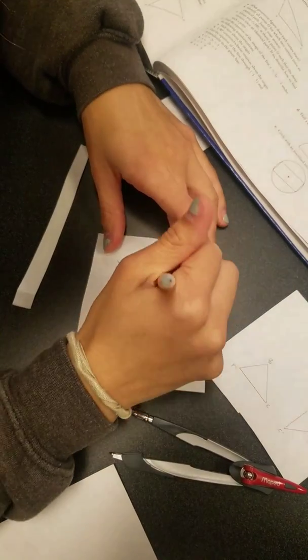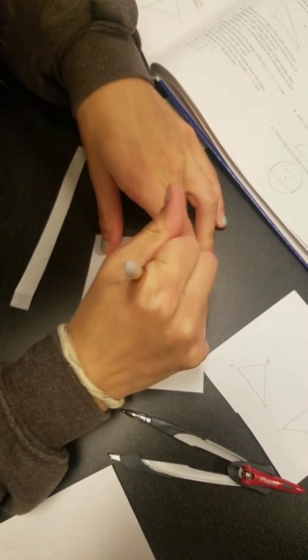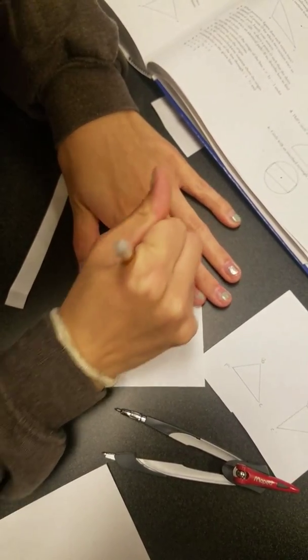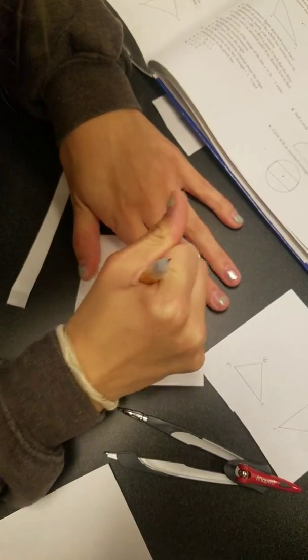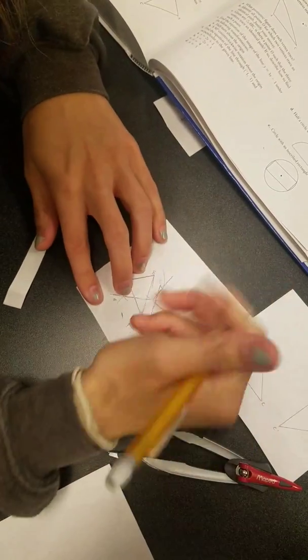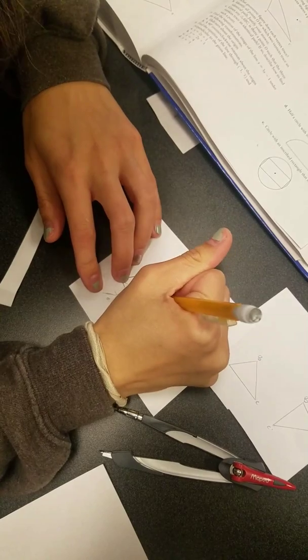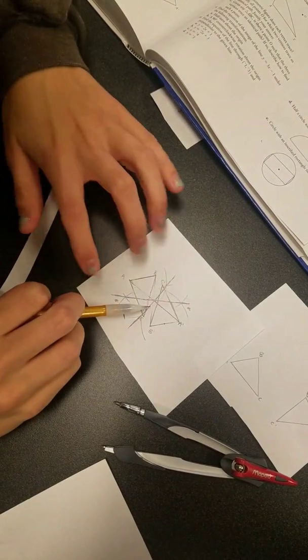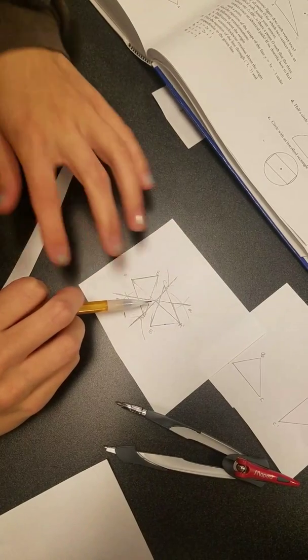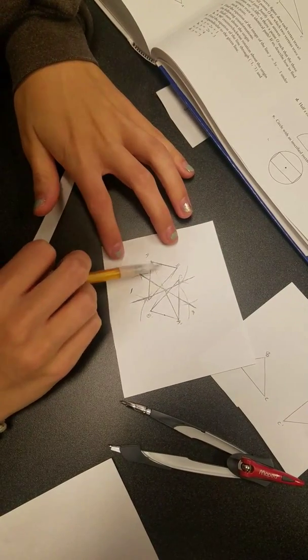I'm going to erase the other lines so that it doesn't look so hectic on our diagram so that we can really see the point O right there. So that is going to be our center of rotation for the image and the preimage.